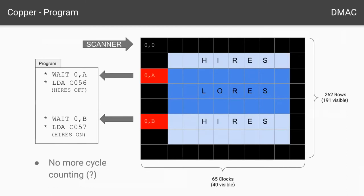This is exactly what the copper does. It has an instruction called wait, so you can wait for a particular raster position, and when that raster position is hit you're able to read or write a particular soft switch. So in this case the top one is high-res off. We scan some low-res for a while, and then when it hits position B, it sets high-res on again, so the lower part and the upper part of the screen are high-res.